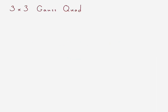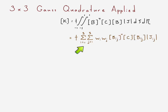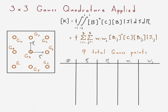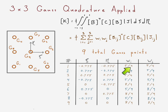We choose a three-by-three Gauss quadrature — three sets of three Gauss integration points — to integrate our stiffness matrix. Similar to the linear element, except now i and j each go to three, giving us nine total Gauss points. Each row in the table corresponds to one of those nine Gauss points with its xi and eta locations within the element and corresponding weights.